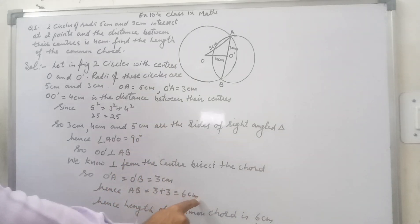If O dash A is 3 cm then O dash B is also 3 cm. AB will be 3 plus 3, 6 cm. Hence, the length of the common chord is 6 cm. This way we can complete this question.